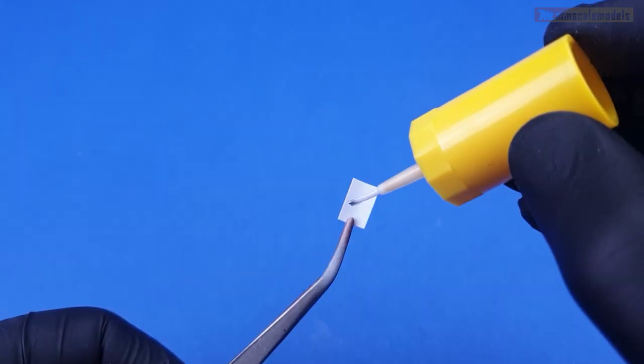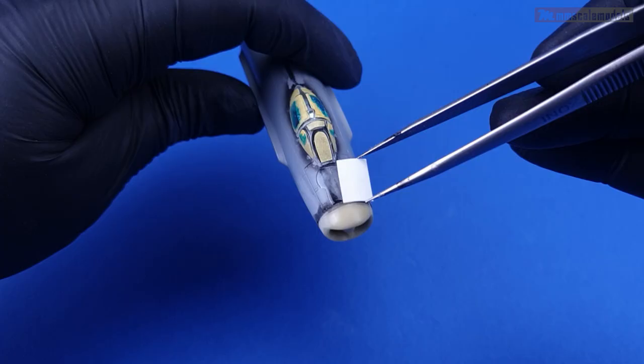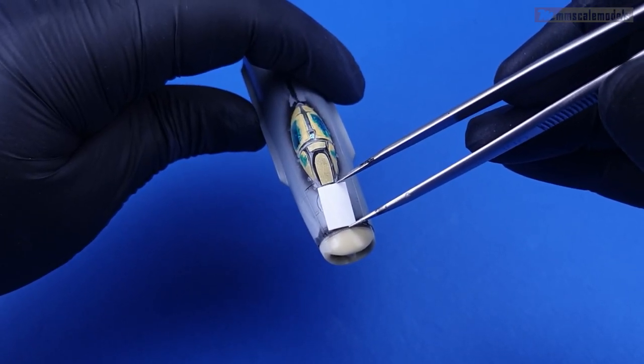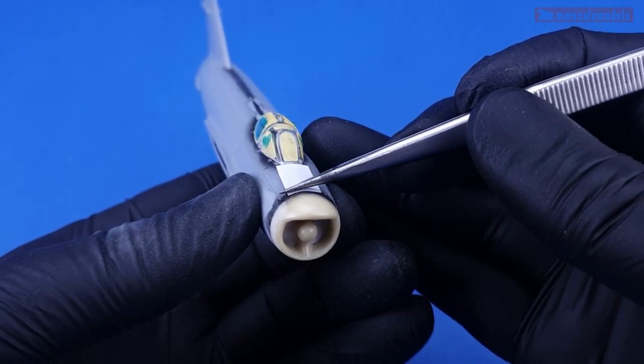First I want to reshape the upper portion of the nose and for that I will laminate a sheet of plastic over the kit plastic. For me this is a better approach than filler when material needs to be added in order to get the desired shape.